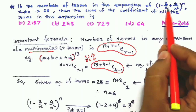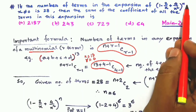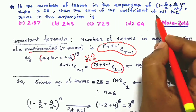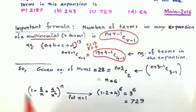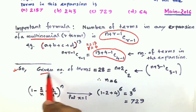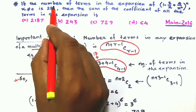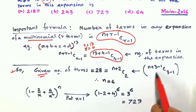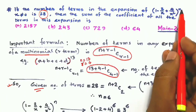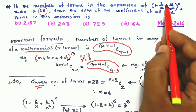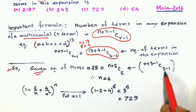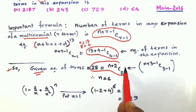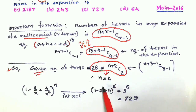Now in our expansion of (1 - 2/x + 4/x²)ⁿ, the power is n and the number of terms in this multinomial is 3, so r equals 3. Given that the number of terms equals 28, we apply the formula: n+r-1 C r-1 gives n+3-1 C 3-1, which is n+2 C 2 equals 28. Solving this, we get n equals 6.